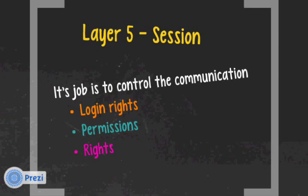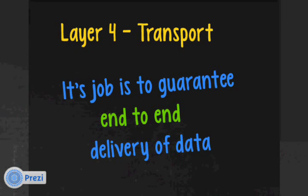Layer four is the transport layer. Its job is to guarantee end-to-end delivery of data. In a client-server model, you want to know the destination exists. When you send data, the destination sends acknowledgements. The destination also checks that received data isn't corrupt by doing error checking and verifying the data. So the transport layer guarantees end-to-end delivery.